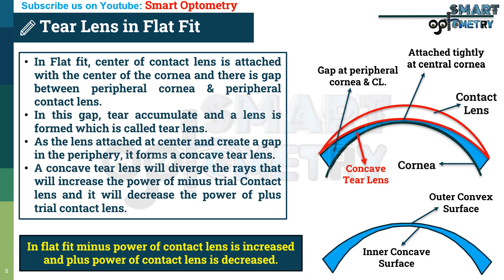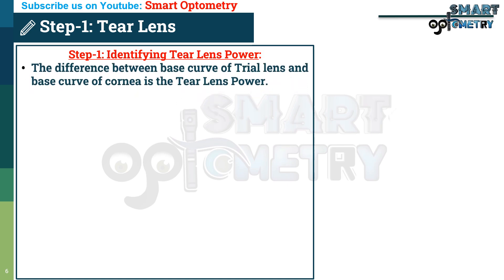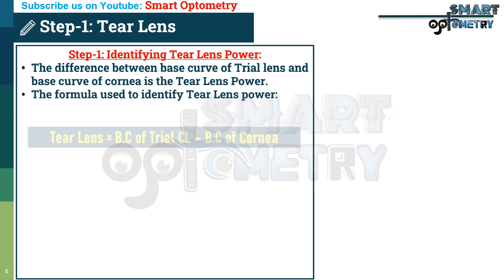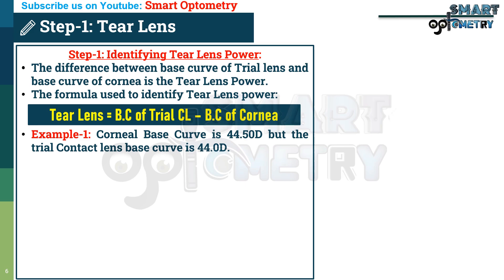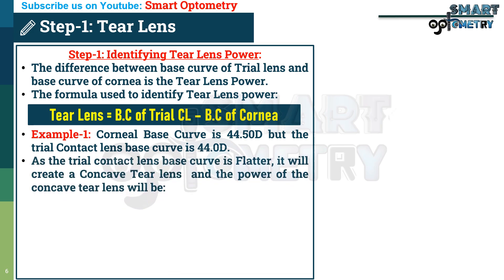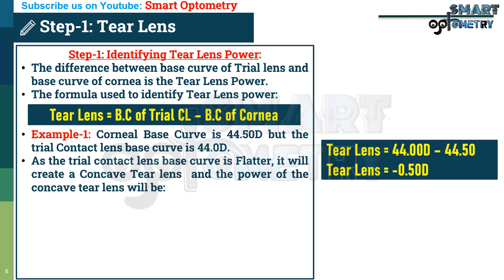When a lens is not fit properly, it creates a tear lens that changes the effective power of the trial lens seen in over-refraction. Step 1 — Identifying tear lens power: the difference between the base curve of the trial lens and the base curve of the cornea is the tear lens power. Formula: tear lens = base curve of trial lens minus base curve of cornea. For example, if corneal base curve is 44.50 D but trial lens base curve is 44.00 D — a flatter fit — the concave tear lens power will be 44.00 minus 44.50 = −0.50 D.